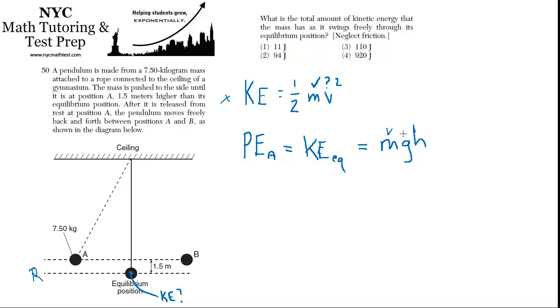And now we know the mass, we know the acceleration due to gravity, and we know the height. So we can actually plug it in. We can get the potential energy at A, and that must be the kinetic energy at the equilibrium position. So let's go ahead and plug that in.